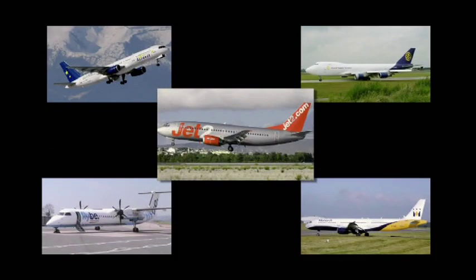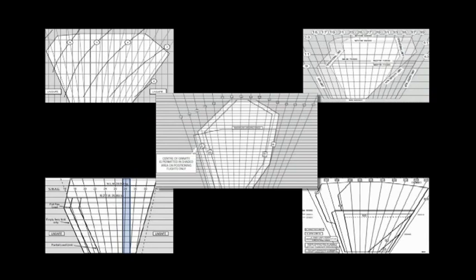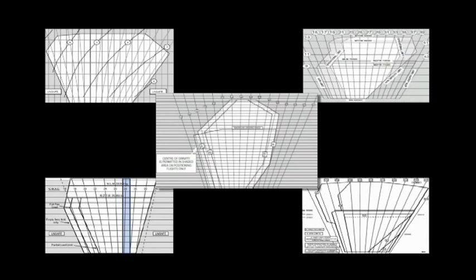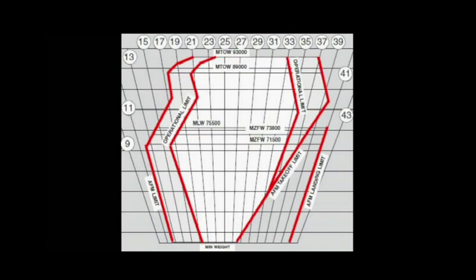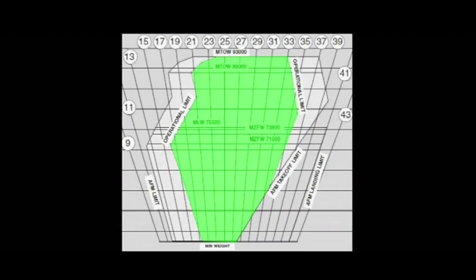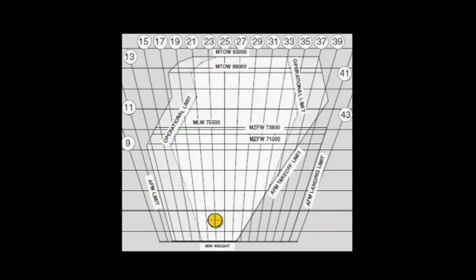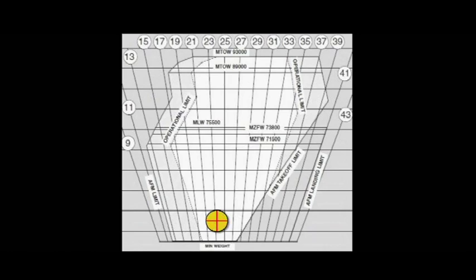Every type and series of aircraft has its own specified safe flight envelope as set by the manufacturer. And every flight envelope has its own specified maximum and minimum limits for both weight and balance. To ensure that control and stability is maintained during all phases of flight, aircraft must be operated within the flight envelope. To achieve that safe condition, the effect of the weight and balance must be calculated. The result of which is called the centre of gravity — the C of G.